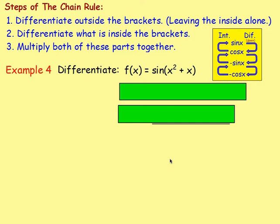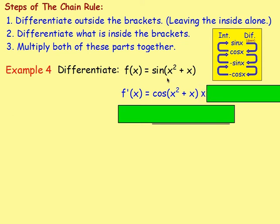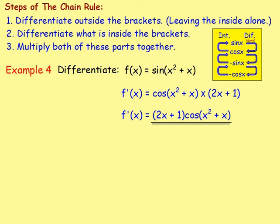Example 4: differentiate f(x) equals sine(x² + x). We've got the brackets and our trig terms. We don't have x in the bottom of a fraction, we don't have any roots, so we can go straight into differentiating. f'(x): differentiate outside the brackets — sine something, sine would go to cos — so cos, keep the brackets as they are. Then multiply by the derivative of what's in the brackets: x² + x differentiates to 2x + 1. So multiply by (2x + 1) — don't forget to put brackets around that. Writing the 2x + 1 first, it becomes (2x + 1) cos(x² + x).